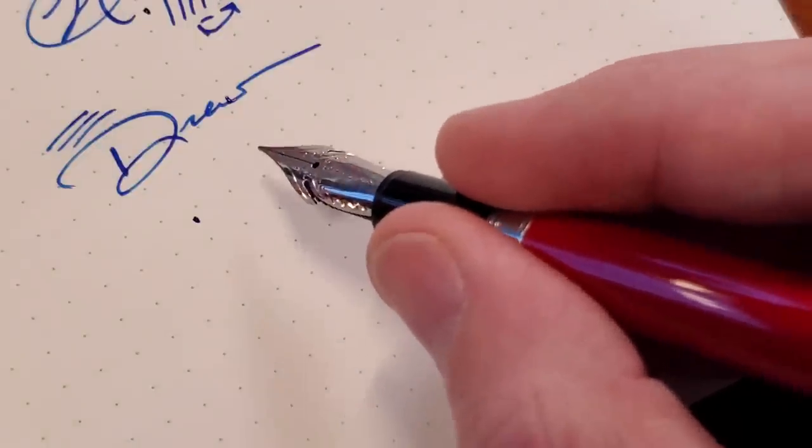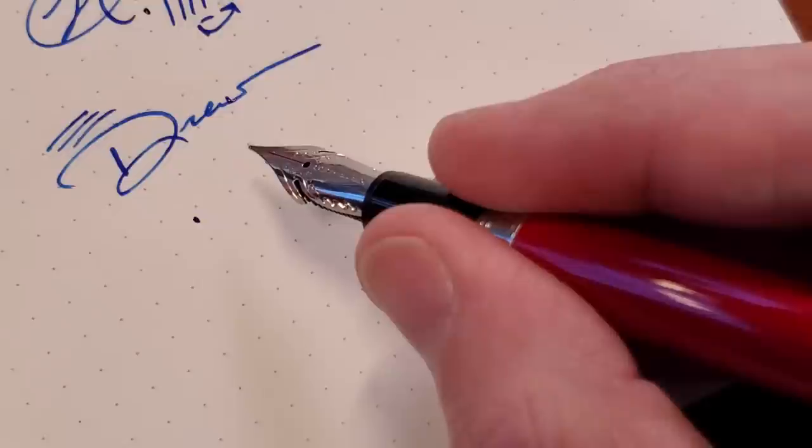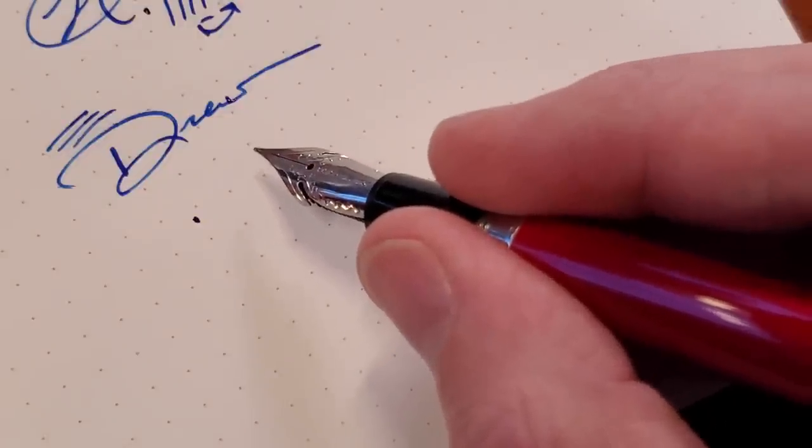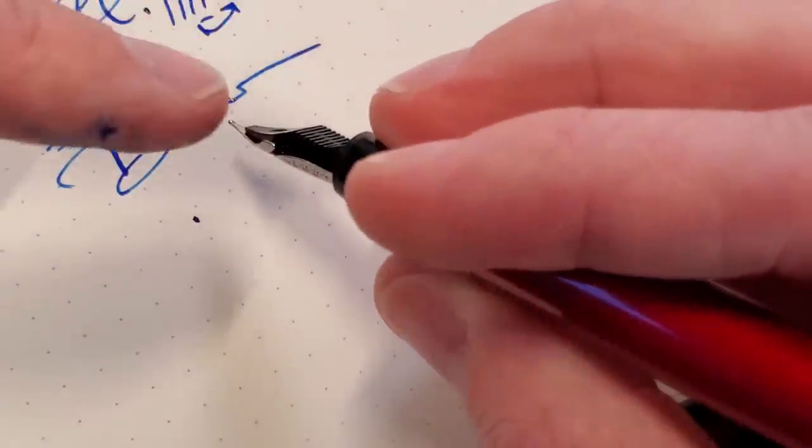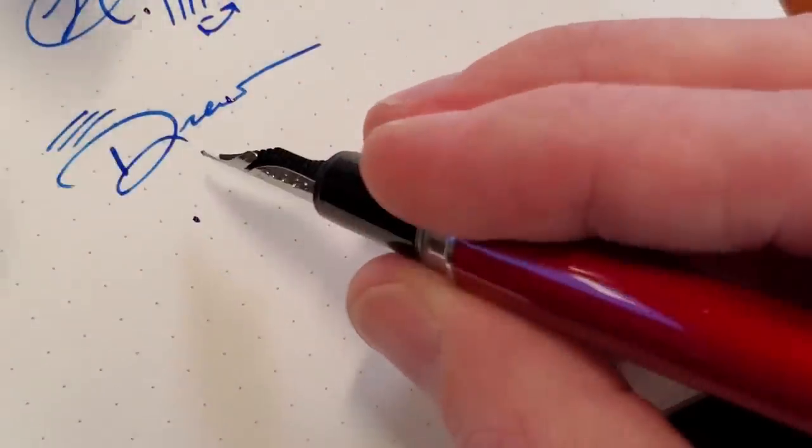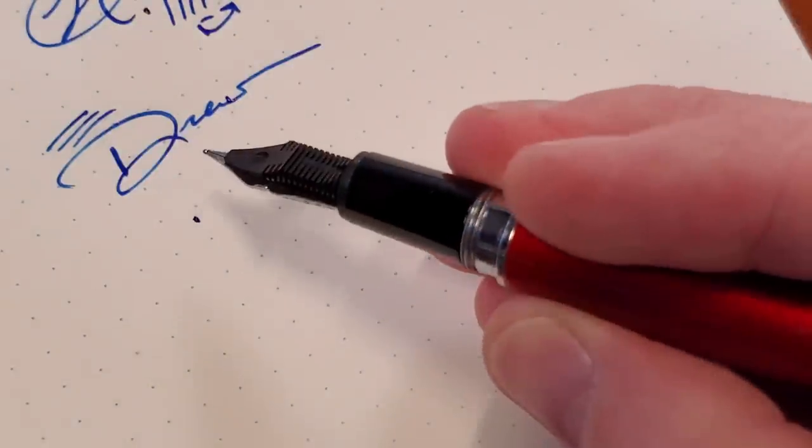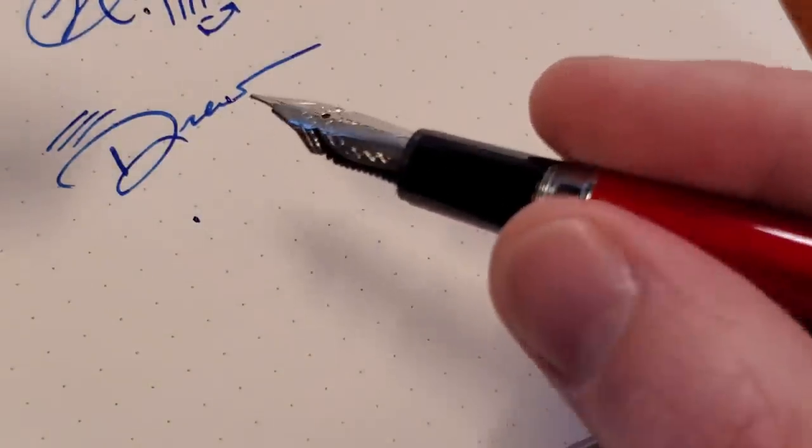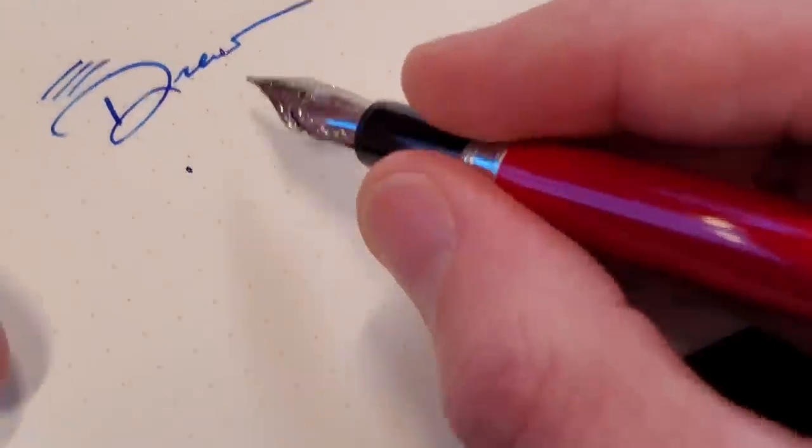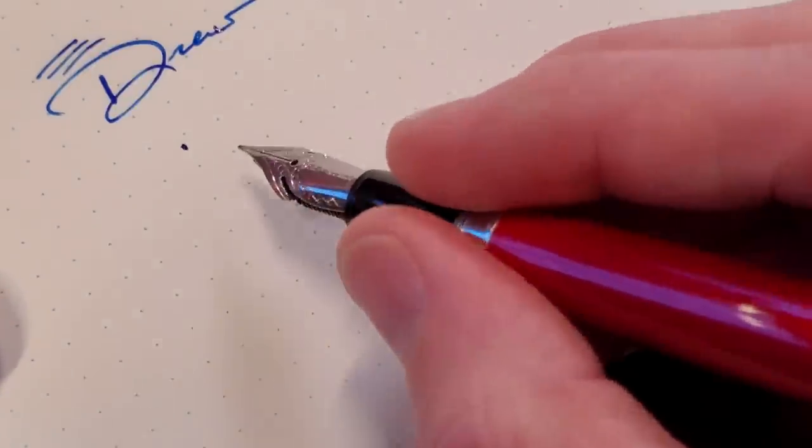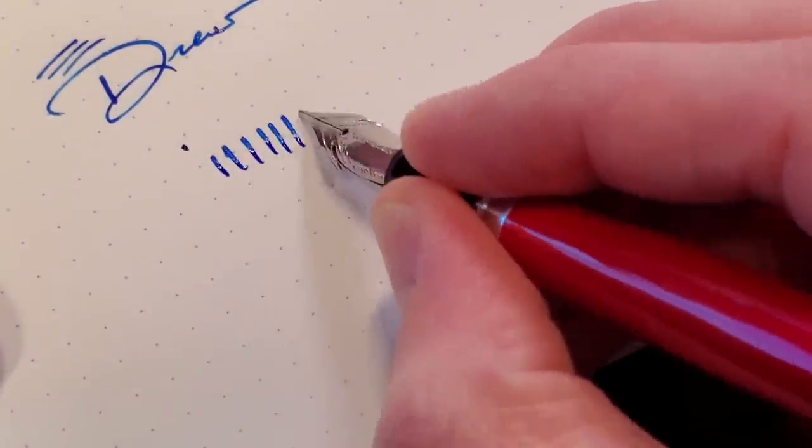So keep in mind, it's not a vintage flex, not designed for crazy calligraphy. It still uses modern feeds. So the feed itself isn't specifically designed for flex nibs. So if you overstress the nib, it's kind of like the nib is capable of doing something the feed isn't.